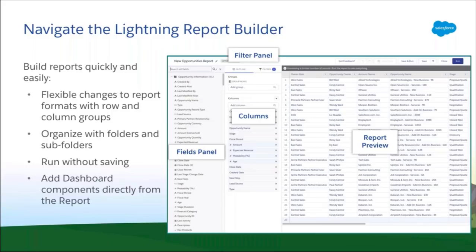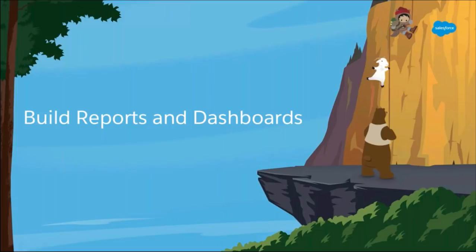Now that the Lightning Report Builder is generally available in Summer '18, all Lightning users can quickly and easily build reports. One difference from Classic is that in Lightning, switching between tabular, summary, and matrix formats is more flexible — you can switch just by adding or removing row groups or column groups. You can save your reports to folders and subfolders, run a report without saving, and after building a report, add your report chart to a dashboard directly.